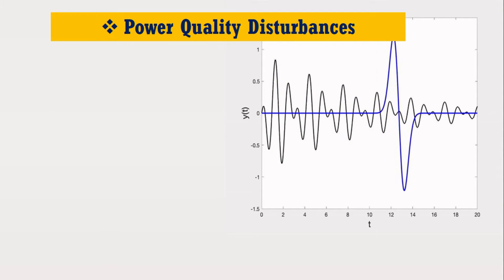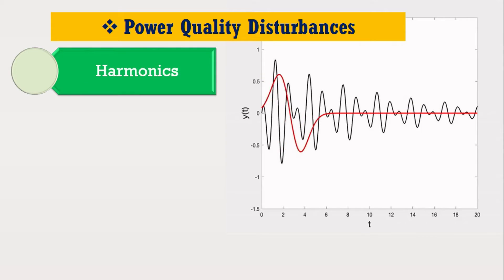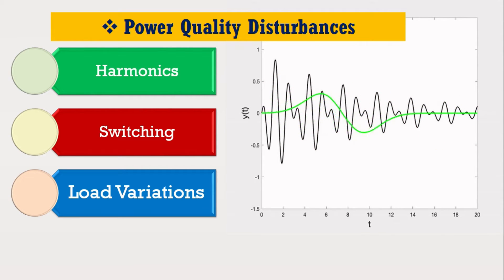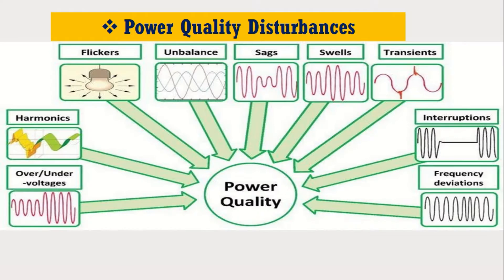These transient disturbances can cause various power quality problems as shown here. Suppose we want to propose a technique that can automatically identify and classify these power quality disturbances — meaning it can distinguish which power quality disturbance the power system has encountered and how it can be mitigated.